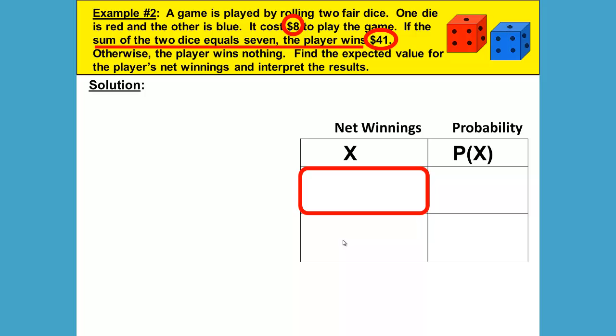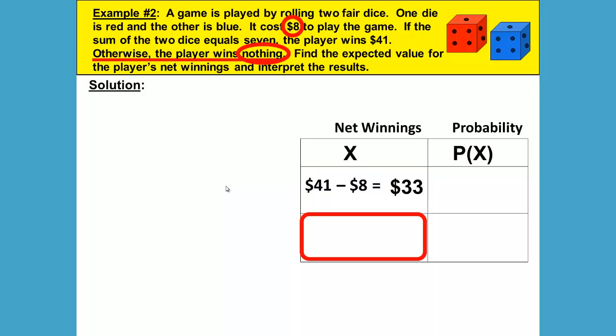First, we'll talk about what happens if he wins. He pays eight dollars to play, rolls a seven, and wins $41. So he'll win $41 minus the eight dollars he already paid to play, so his net winnings would be $33. The other option is that he pays eight dollars to play the game, doesn't roll a seven, and wins nothing. So he wins nothing minus the eight dollars it cost him to play, and his net winnings is negative eight dollars, meaning he loses the eight dollars it cost him to play.